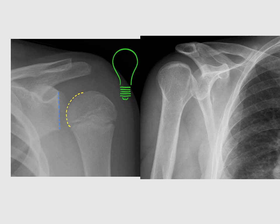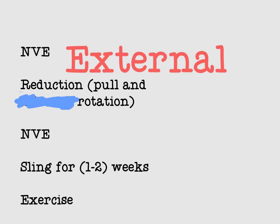The light bulb sign means the view of the humeral head on X-ray looks like an electrical light bulb. This light bulb sign is an indicator of posterior dislocation of the shoulder.